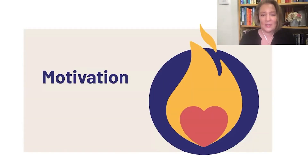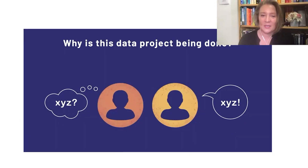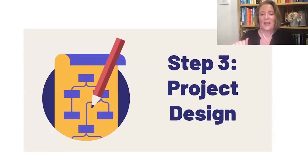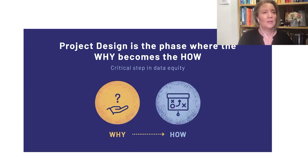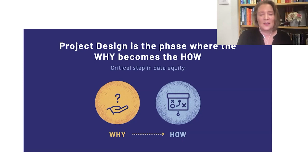Number two is motivation. Motivation is why does the data that you're citing exist? Who decided that this data would exist and what purpose is it serving? Step three is project design. The data that exists was collected by somebody who designed the way that it would be collected.